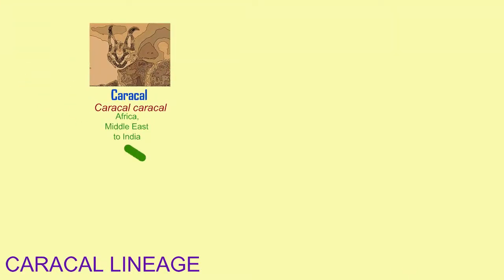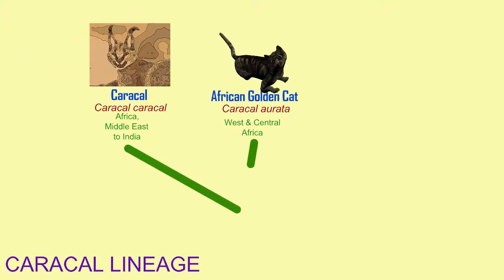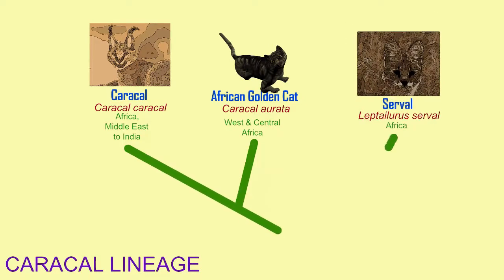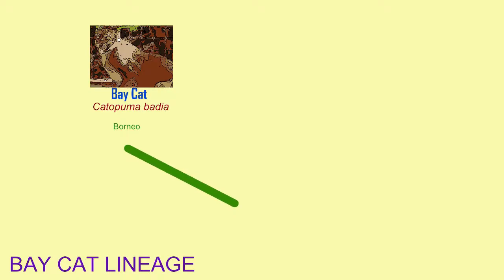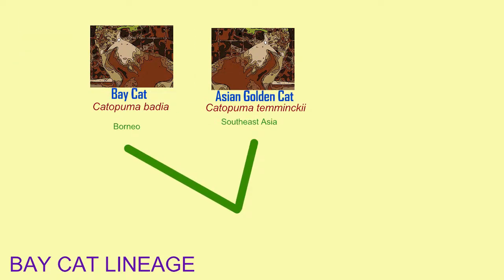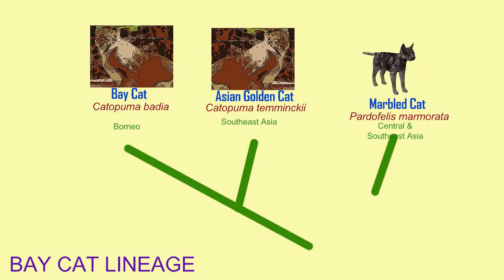There are three cat species in the Caracal lineage, which exist in Africa, with the caracal also being found in Central Asia. Finally, there are three cat species in the Bay cat lineage, which exist in Central and Southeast Asia.